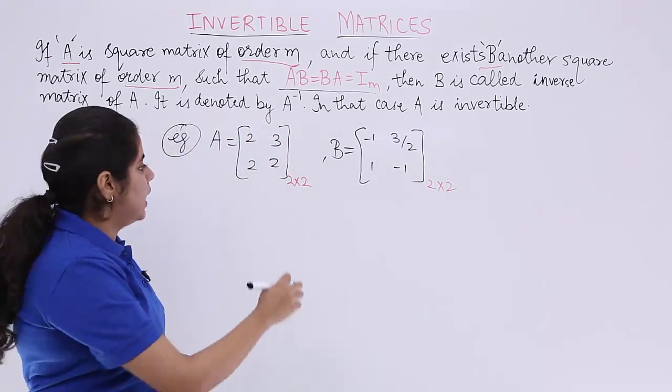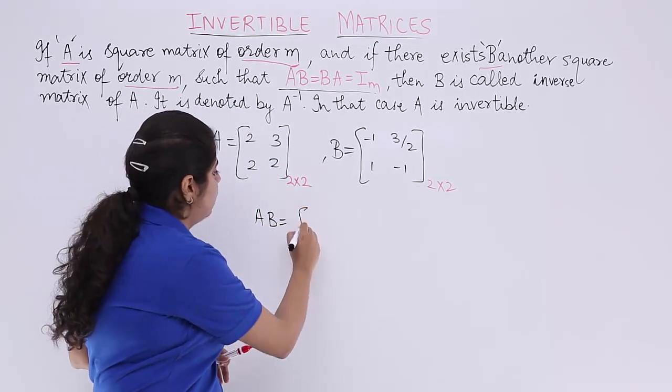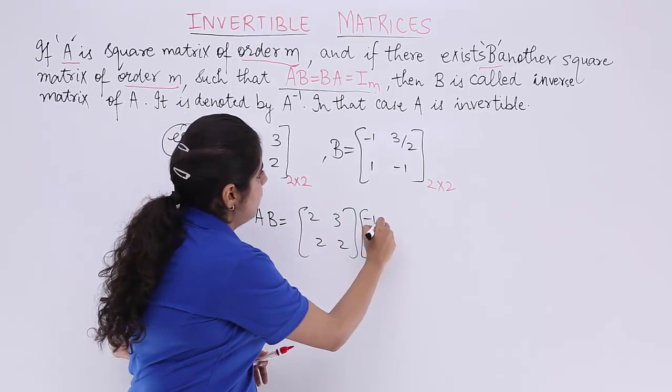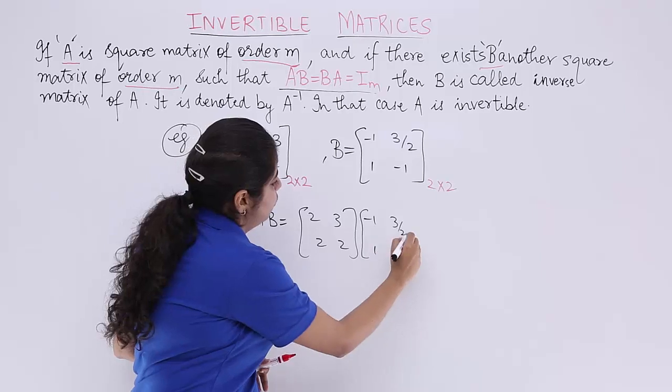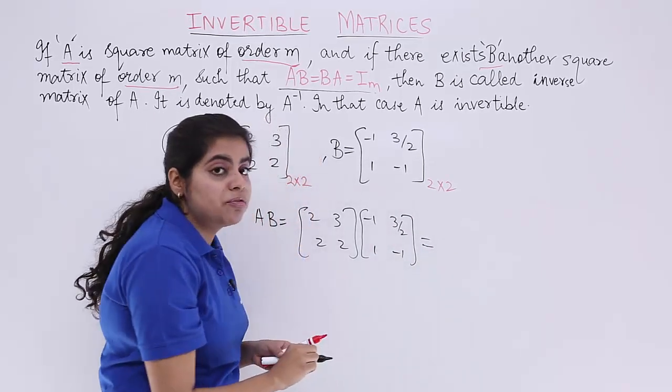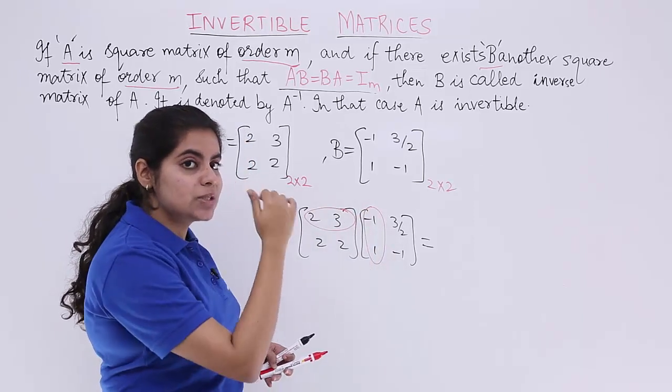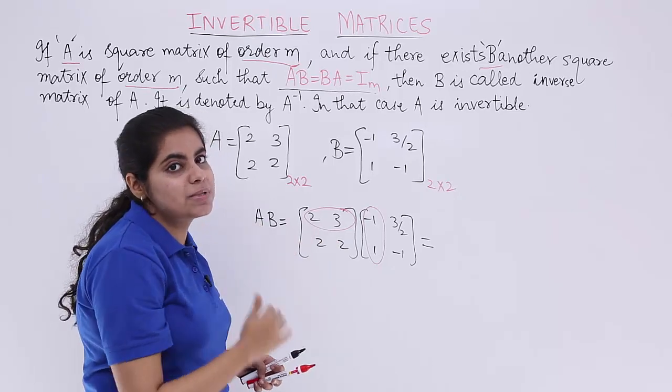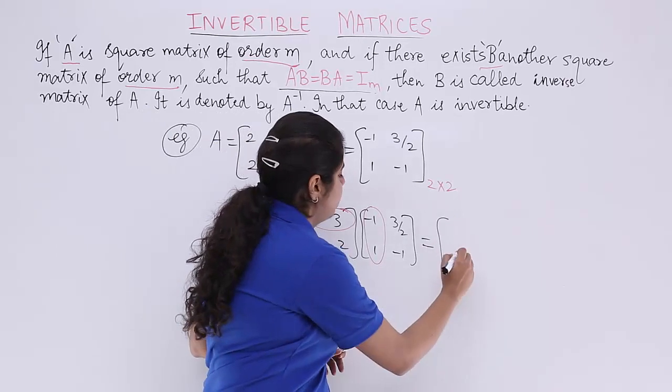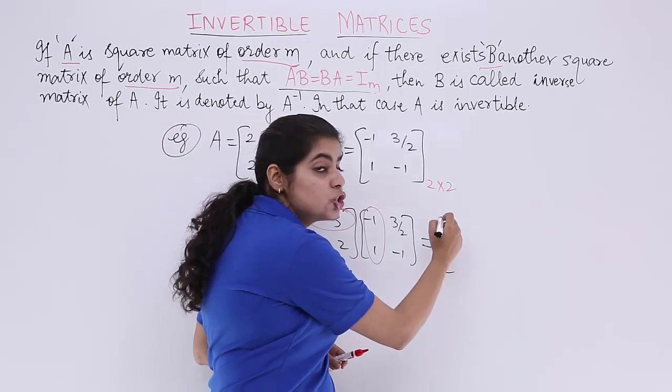Now, take the product AB. AB means what? You need to write first A then B, write first A, 2, 3, 2, 2, write B and then multiply. So minus 1, 3 by 2, 1, minus 1. Let's see what is the result. First row, first column. So that is first row, first column. Then first row, second column, second row, first column, second row, second column. So 2 into minus 1 is minus 2 and 3 into 1 is 3. So minus 2 plus 3 is 1.